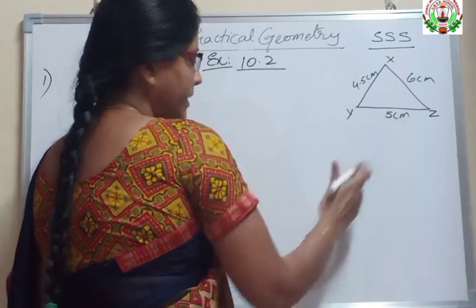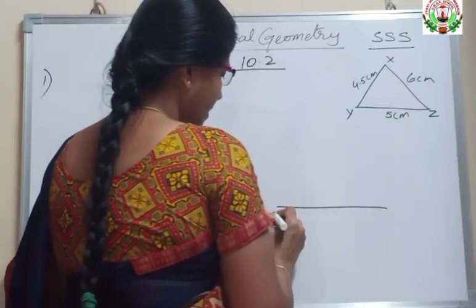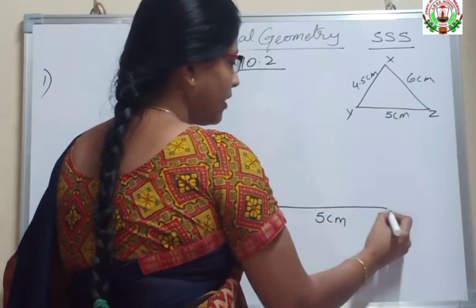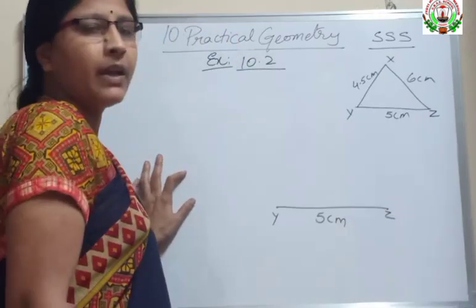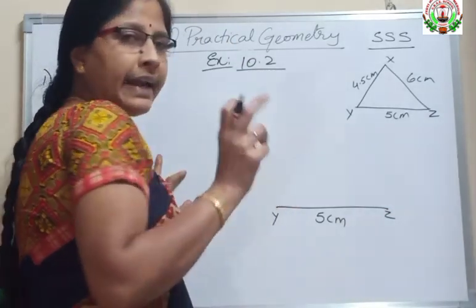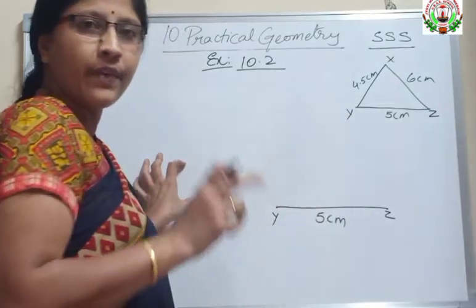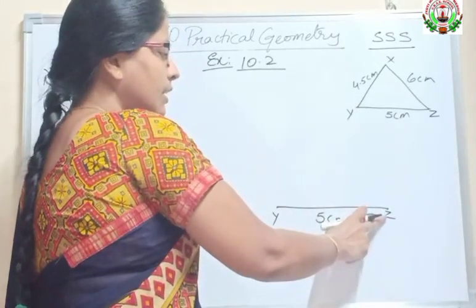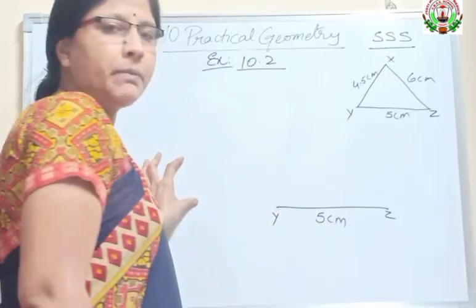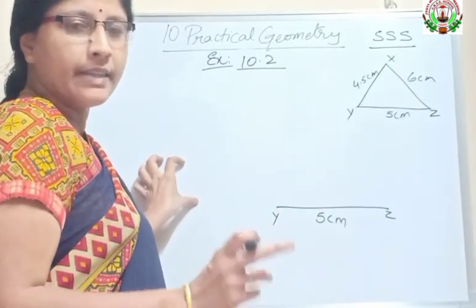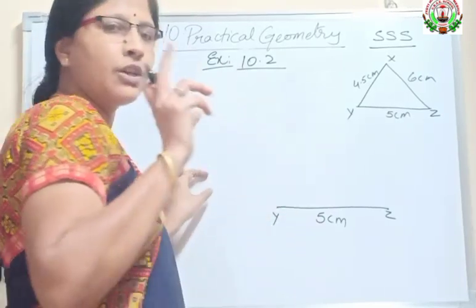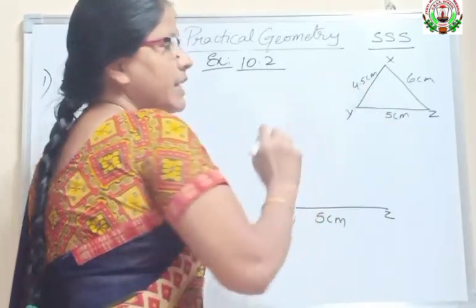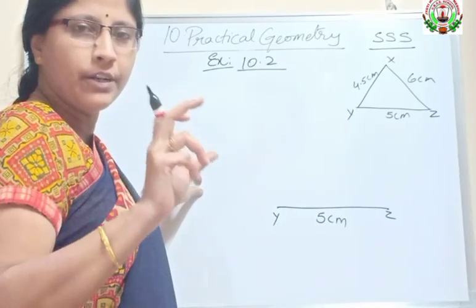First, using your scale, measure 5 cm. Keep the marking using your scale and pencil and draw a line segment. I am using the word line segment because the length of the line is fixed — 5 cm. So using your scale and pencil, measure YZ as 5 cm and name it as YZ. Next, using your rounder, open it and measure XY which is 4.5 cm using your rounder and your scale.